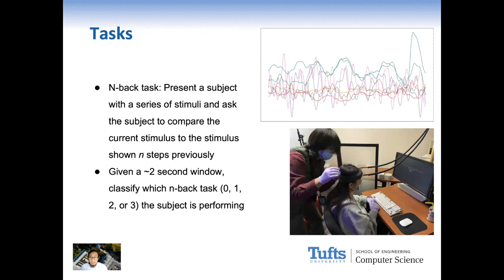We use the N-back task to trigger different levels of short-term memory mental workload from the subject. N-back is a well-established task in experimental psychology which we believe is closely correlated with many UI tasks. In the N-back task, we present the subject with a series of stimuli and ask them to compare the current stimulus to the stimulus shown n steps previously.